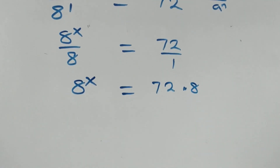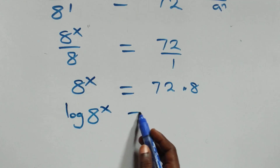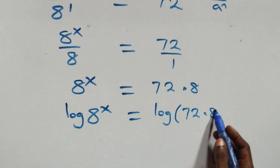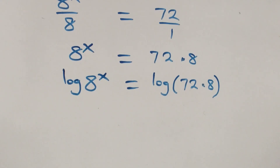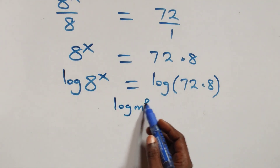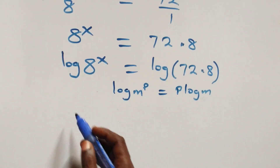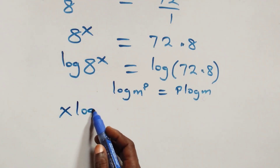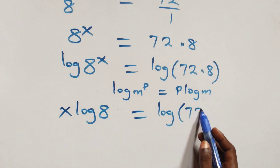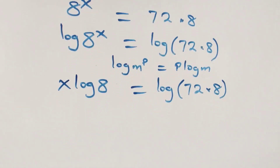Next step, we take the log on both sides: log of 8 raised to power x equals log of 72 times 8. We then apply the power log rule — log of m raised to power p equals p times log m — so we have x times log 8 equals log of 72 times 8.